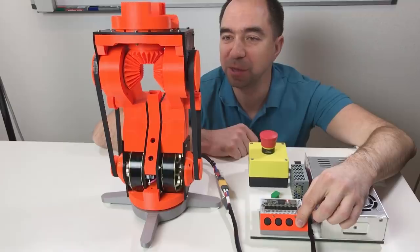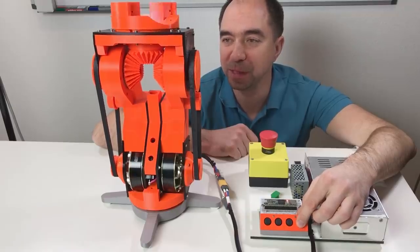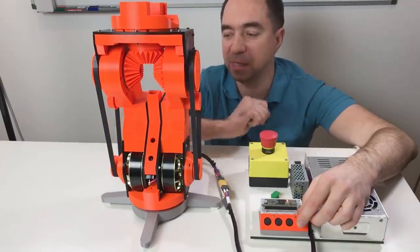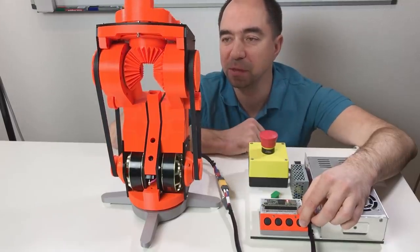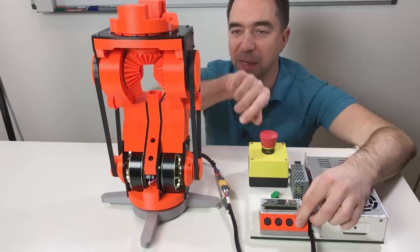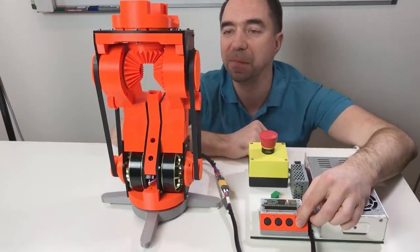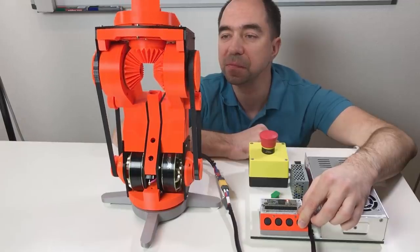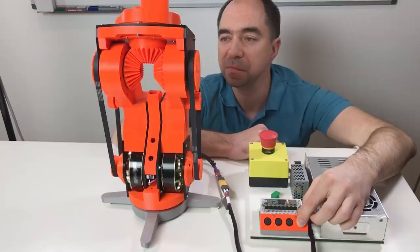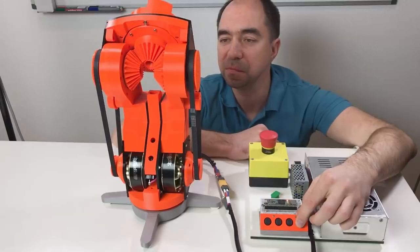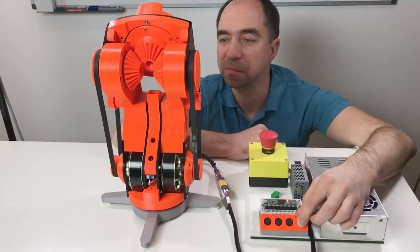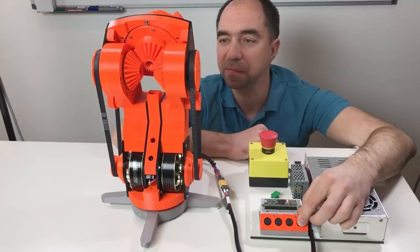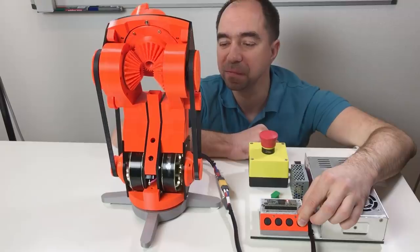When I move the joystick up and down, the two motors rotate in the opposite direction, and like this, this axis rotates. And when I'm moving the joystick left and right, this axis rotates. Looks cool!